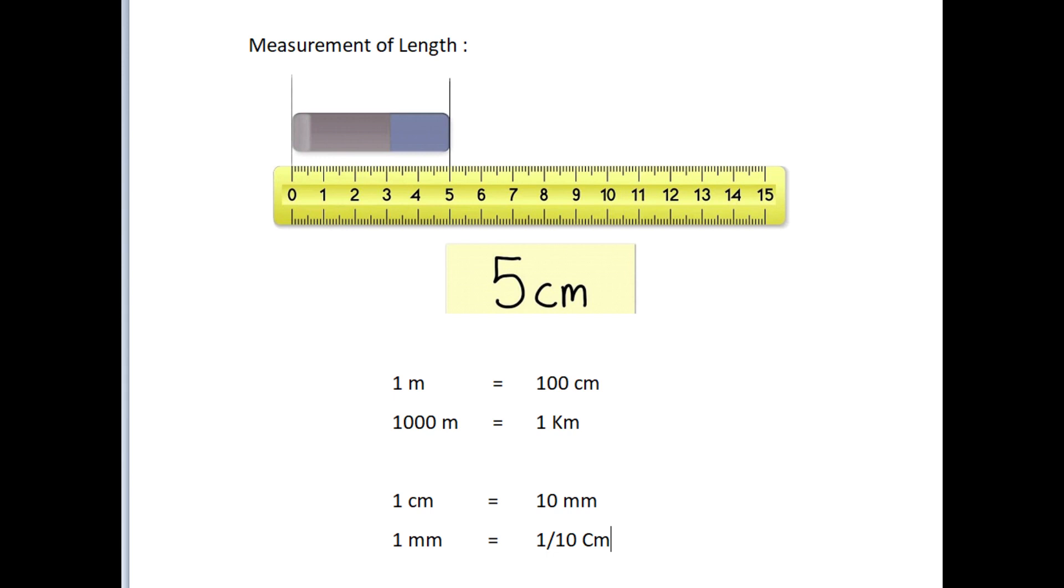1 meter equals 100 centimeters. 1000 meters equals 1 kilometer. If a centimeter is further divided into 10 equal parts, each part is called a millimeter. So 1 centimeter equals 10 millimeters, and 1 millimeter equals 1/10 centimeter. We use millimeter to measure very small length or when we want to measure length with greater accuracy.